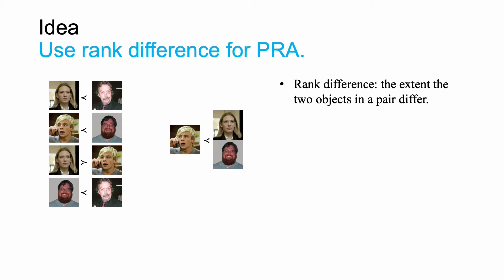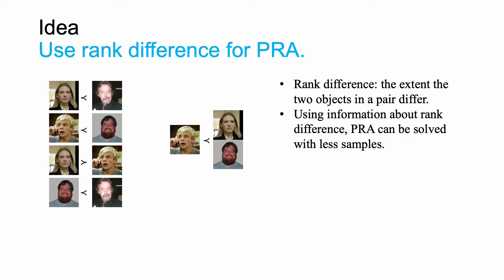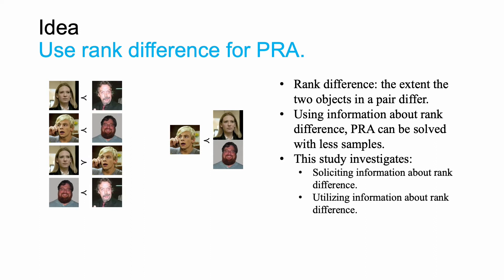More generally, we say that the rank difference is the extent to which the two objects in a pair differ according to the prescribed ranking criteria. Our hypothesis is that with information about rank difference, PRA can be solved with fewer examples. So this study investigates first, how to solicit information about rank difference, and second, how to utilize information about rank difference in aggregating answers.